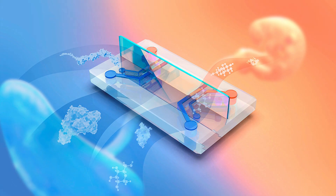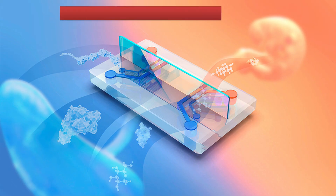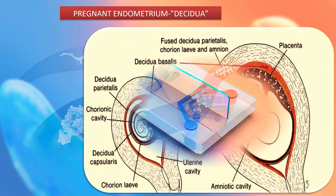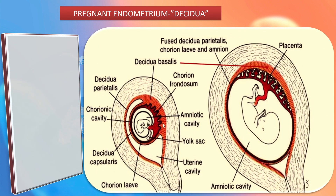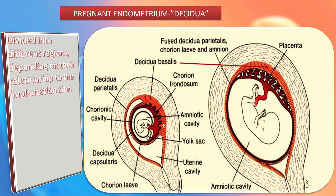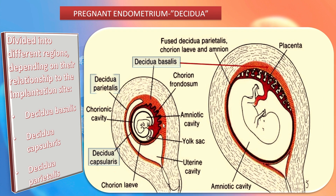Let us study the pregnant endometrium, or the decidua. It is divided into different regions depending on their relationship to the implantation site: first, decidua basalis; then decidua capsularis; and finally, decidua parietalis.